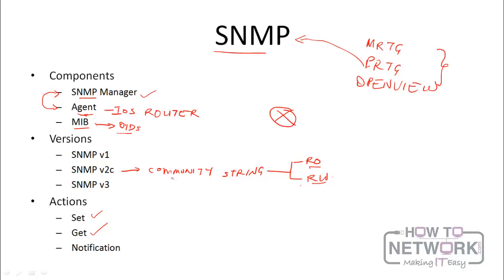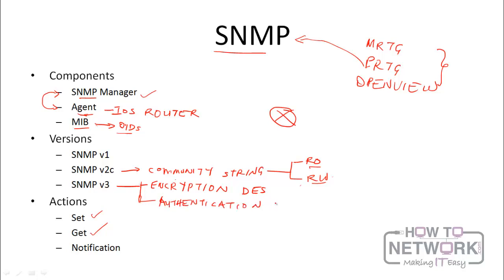The thing with the community string is that it's just one string, which makes SNMP version 2c very insecure. But for SNMP version 3, there are many security features. For instance, SNMP version 3 has encryption — we can encrypt with the DES algorithm — and we also have authentication. You can turn on these features simultaneously or just one of them, depending on what you need. So with messages encrypted, it makes SNMP version 3 a lot more secure.